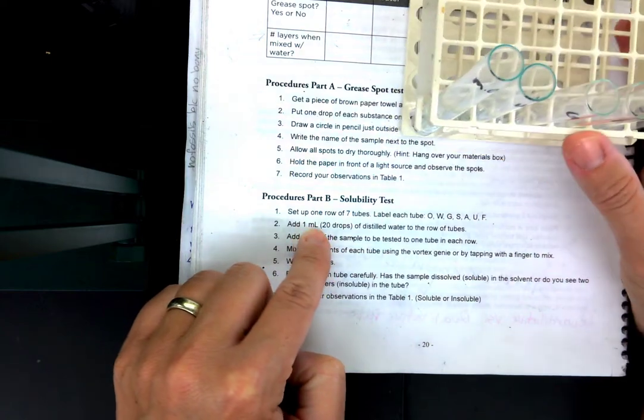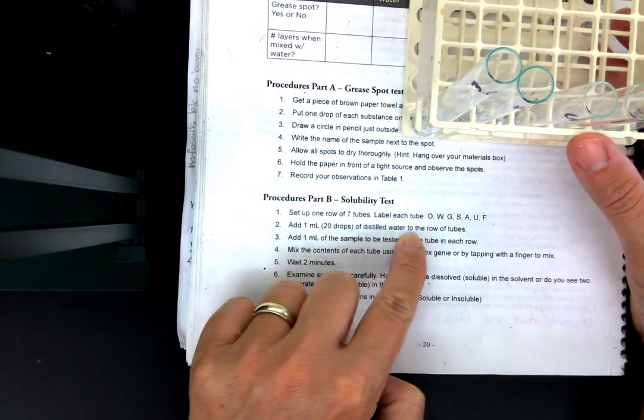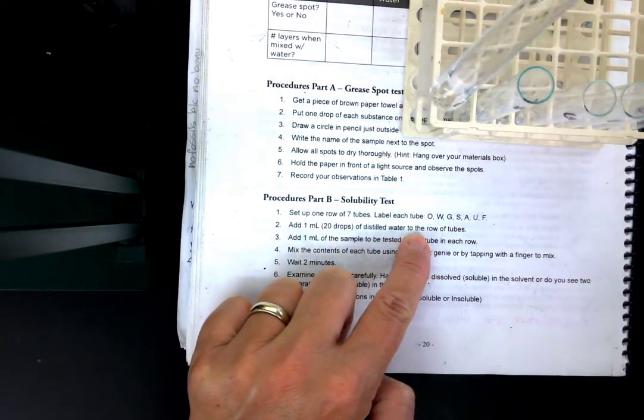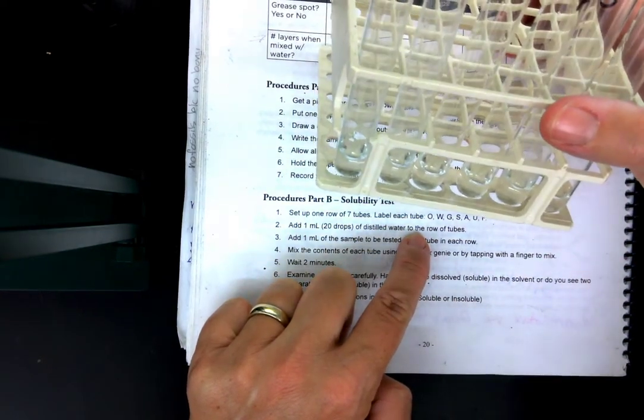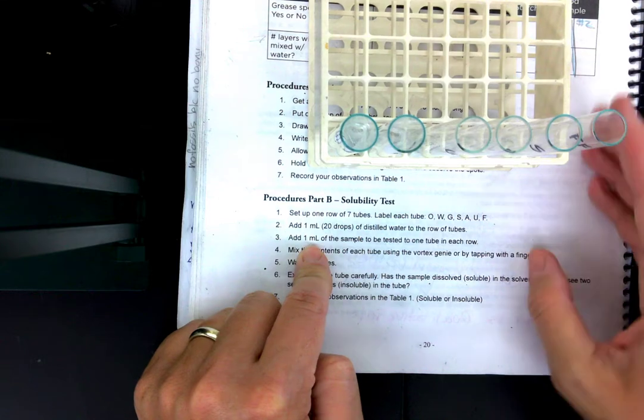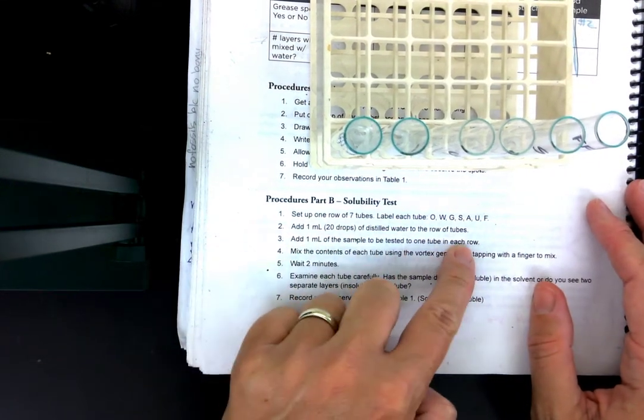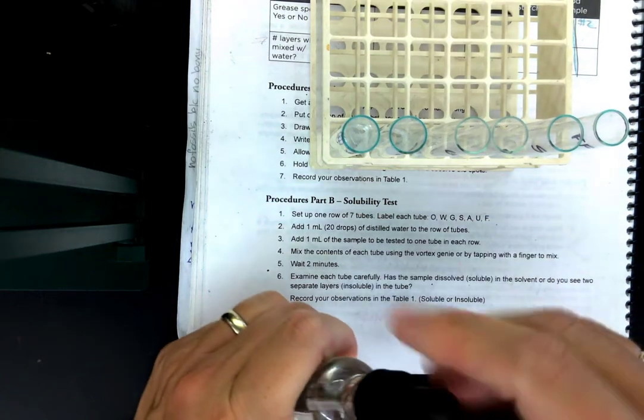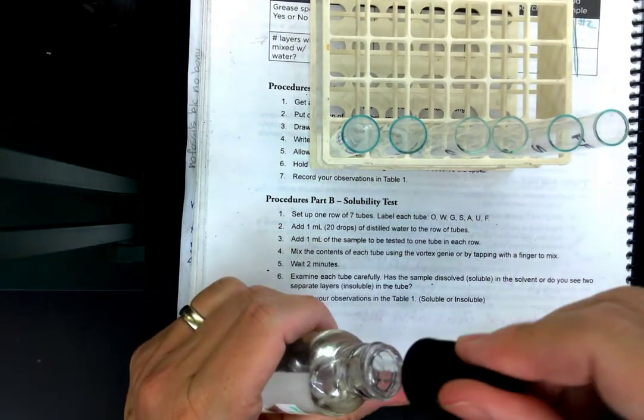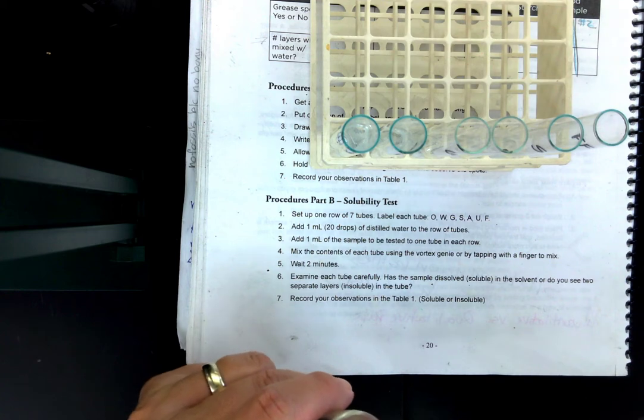It tells me to add 1 milliliter, 20 drops of distilled water. So I've already done that. All that's in these tubes right now is just water. Then I'm going to add 1 milliliter of the sample to be tested. And pretty much it works just like this.